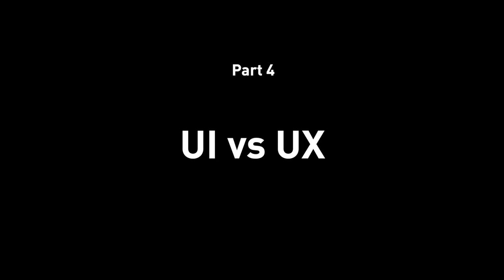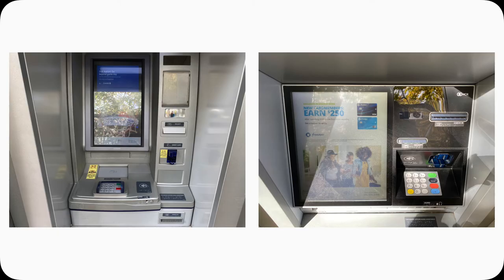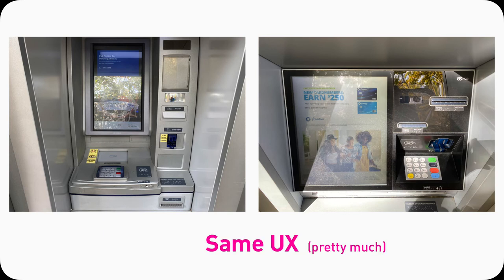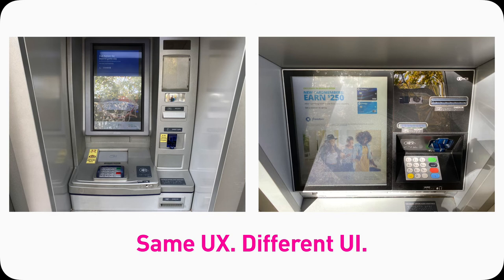Part 4: UI vs UX. These are two ATM machines by Chase. They have pretty much the same UX because these two ATM machines help achieve very similar things — you put in your PIN number, you take the money out, you deposit checks, you get cash — but they look different, right? They have different layouts, different placement, meaning they have two different interfaces. So same UX, different UI here.